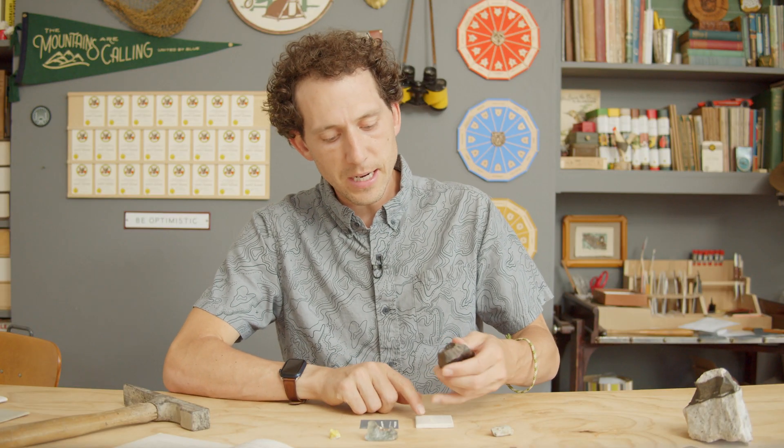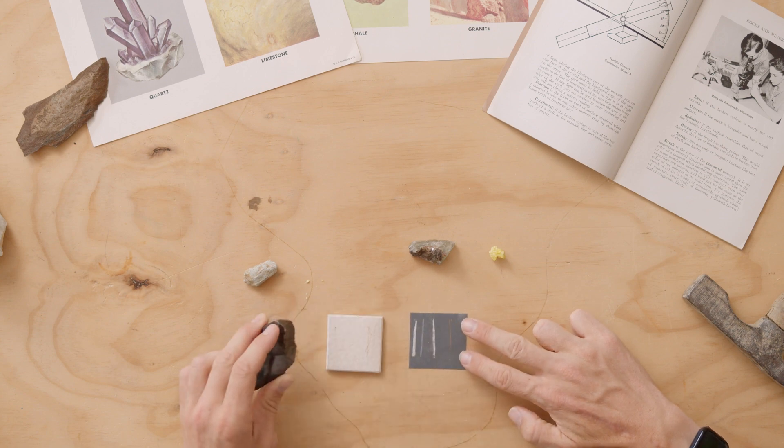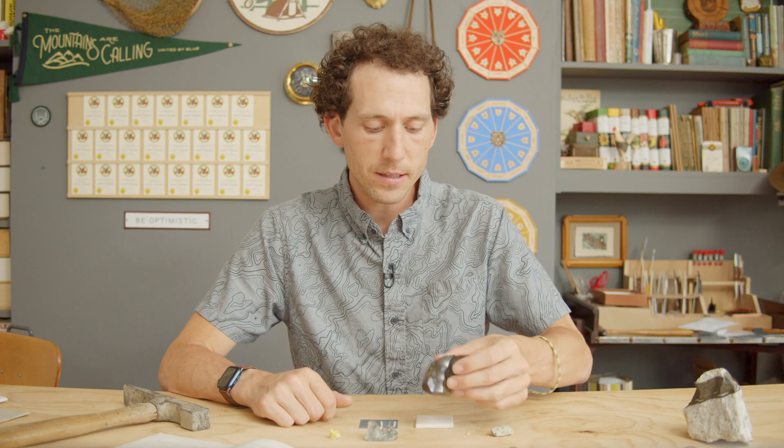Last is hematite, which leaves a reddish-brown mark. Even though the mineral looks black, it leaves a brownish-red mark.